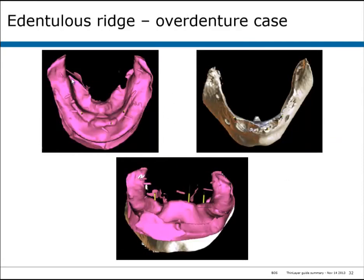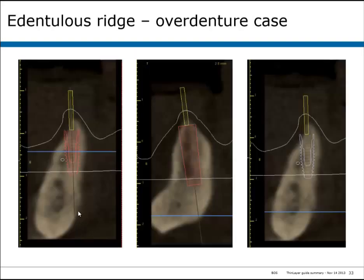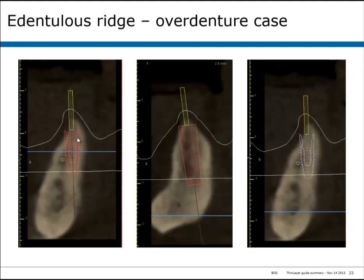Finally, for an overdenture case, an impression of the ridge was taken and merged with the patient scan. In the cross-sectional view — critical for an overdenture case — the outline of the soft tissue ridge is superimposed on the hard tissue. This allows implants to be placed through the apex of the soft tissue ridge rather than through the lingual, which would have been a surgical mistake requiring a thicker lingual flange to accommodate the attachment housing. It's extremely common in the lower anterior region for the soft tissue ridge to be anterior to the hard tissue ridge, which can result in a surgical error if the implant is placed based only upon bony anatomy.